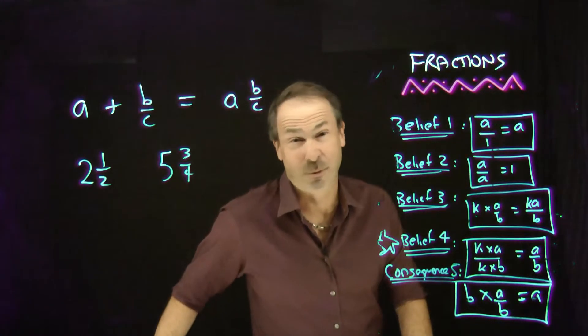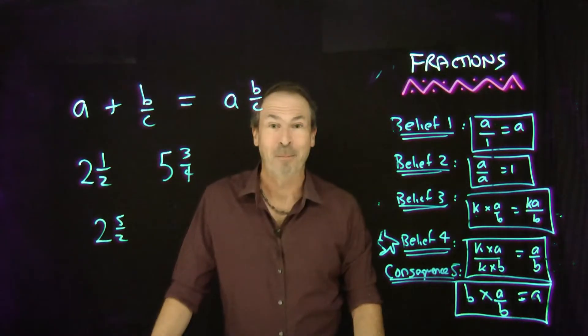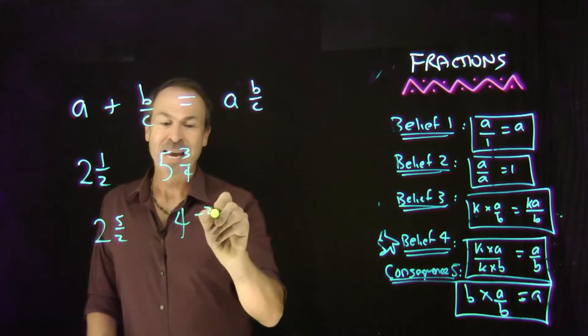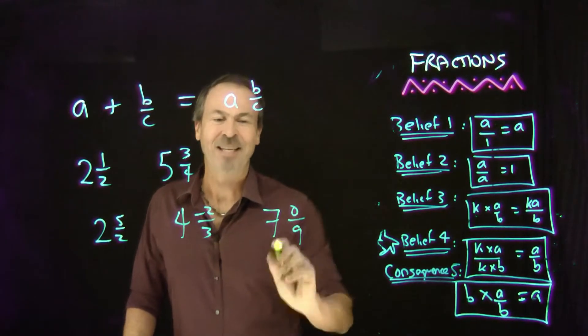Actually it can be quirky, and people don't tend to be quirky, but technically 2 and 5 halves is a mixed number. And 4 and negative 2 thirds is a mixed number. And 7 and 0 ninths is a mixed number.